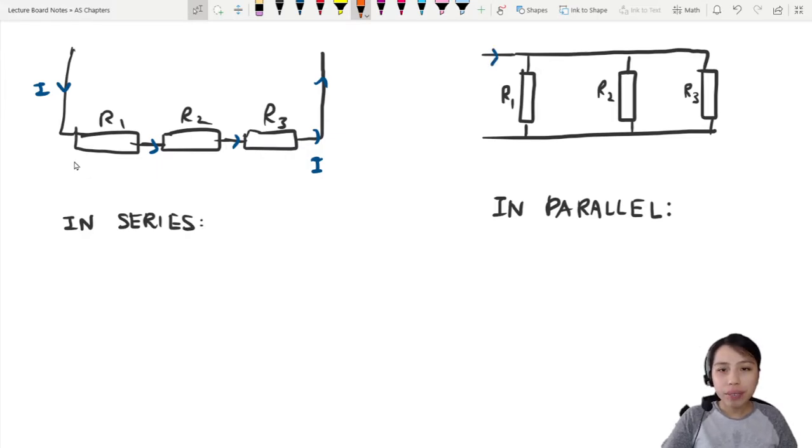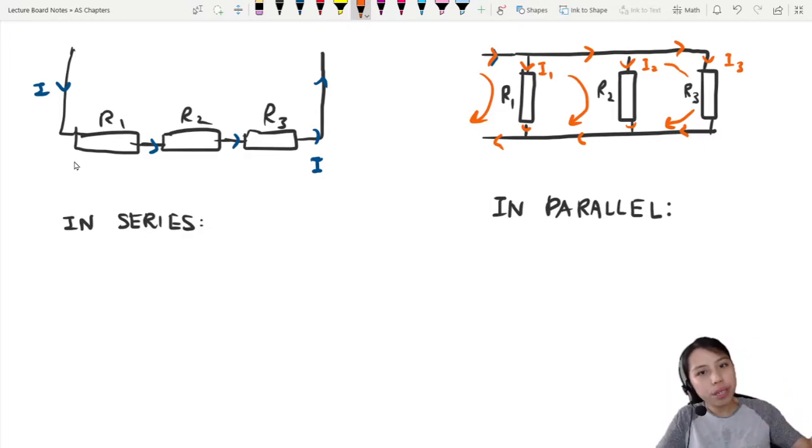However, in parallel, if you look at the path, the current can choose to go the first resistor and go back or it could go to the second resistor and then go back or it could go on to the third resistor and go back. So there's a few possible currents here, I1, I2 and I3. That's how we know it's in parallel because there's many parallel lines that the current can take in order to complete a cycle or a loop that go back to the battery.